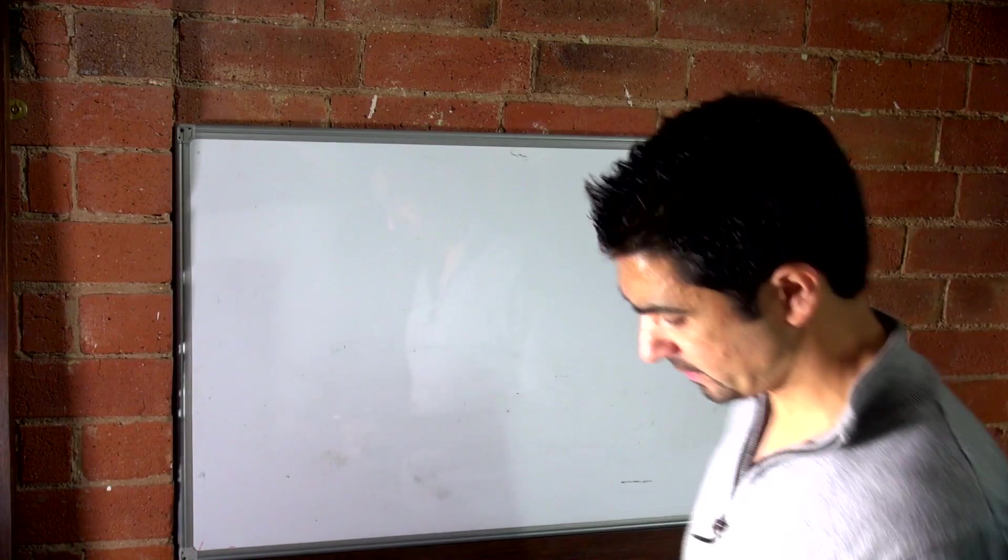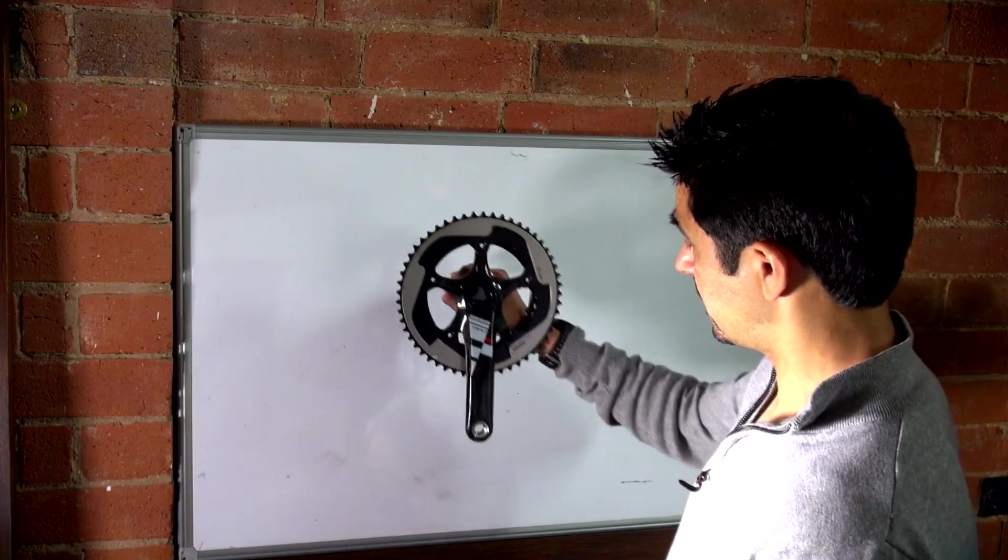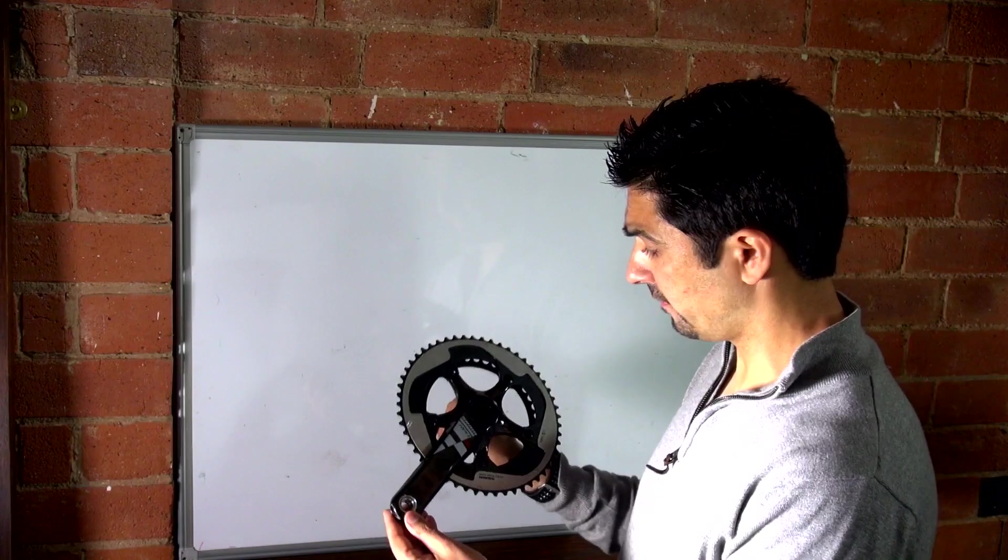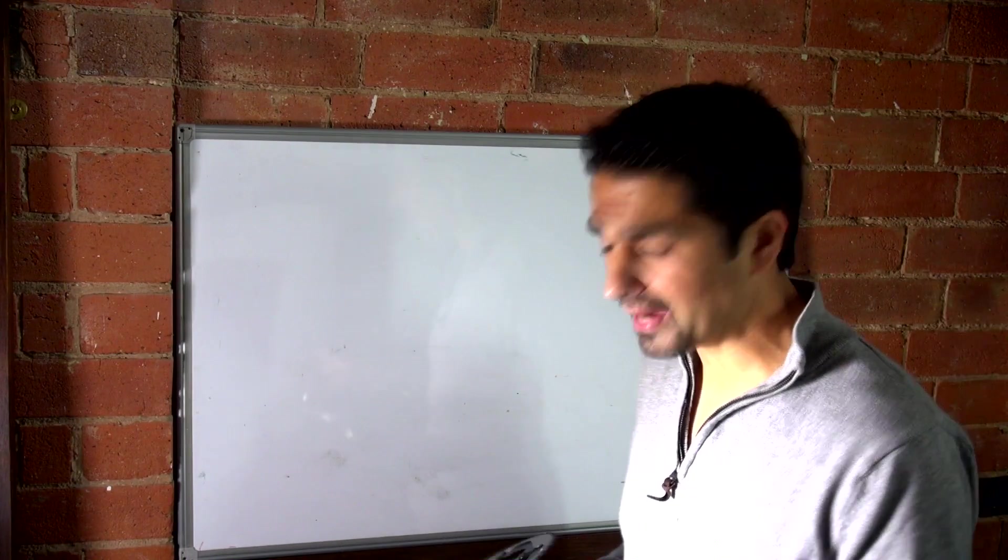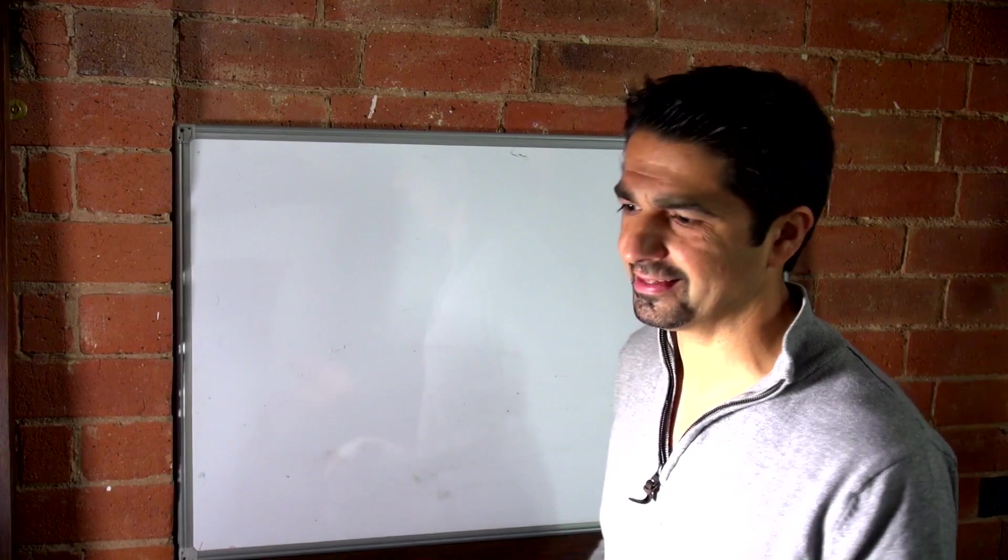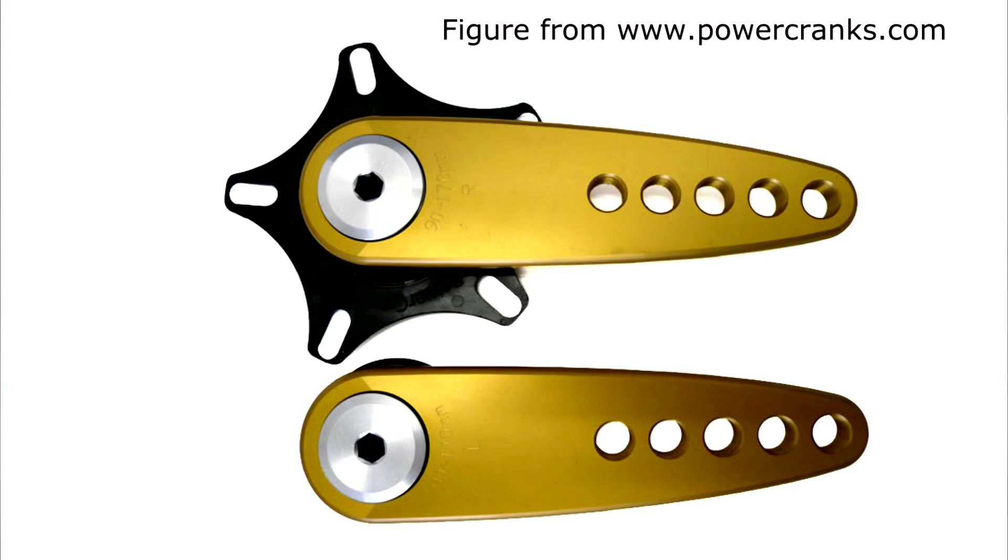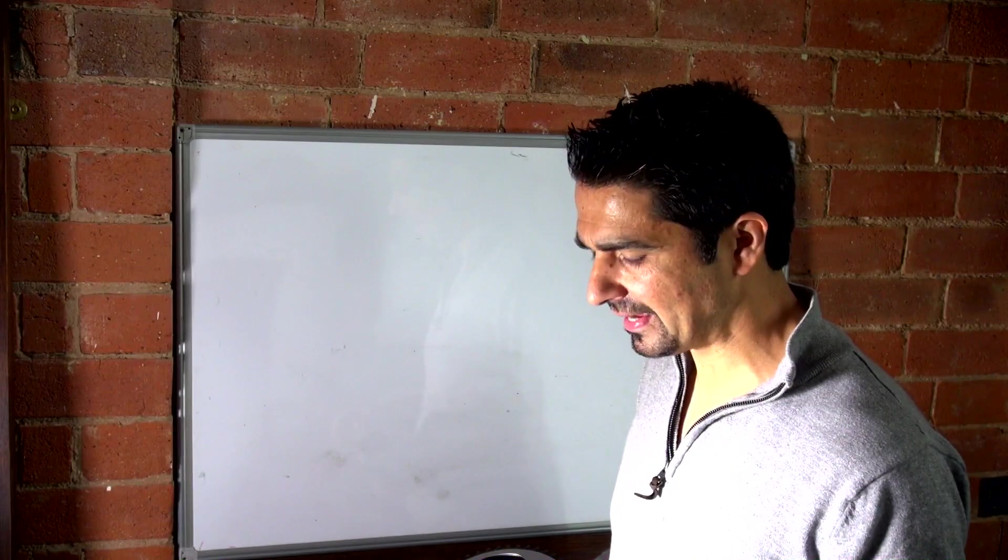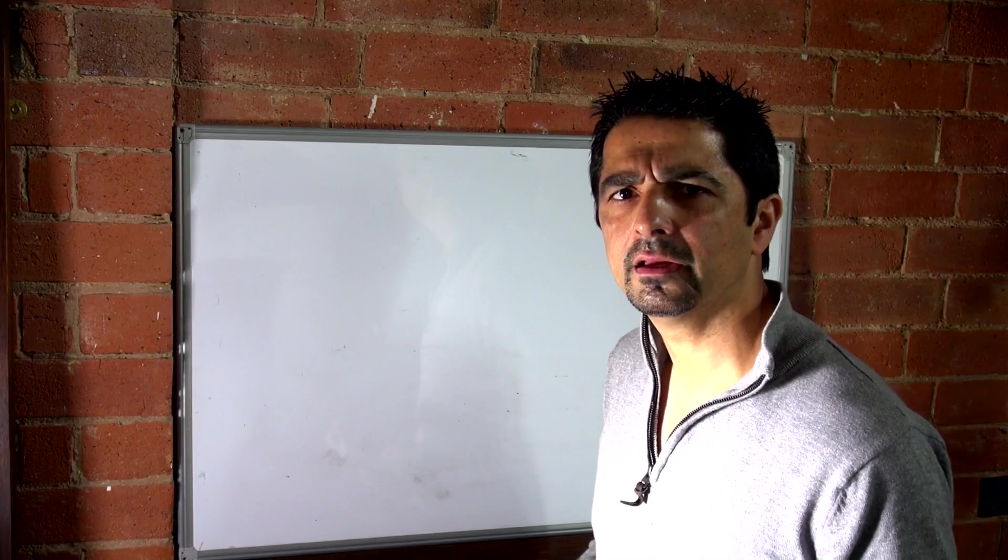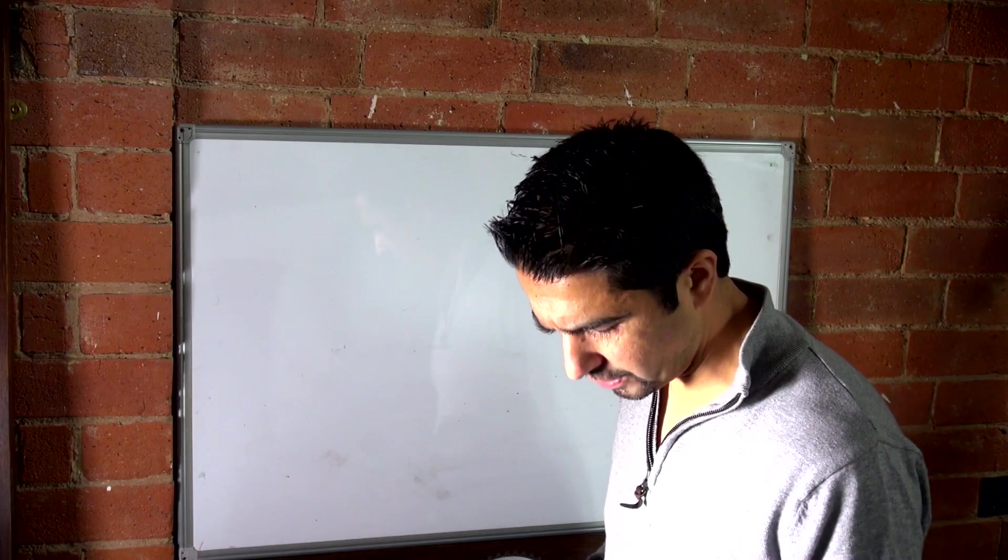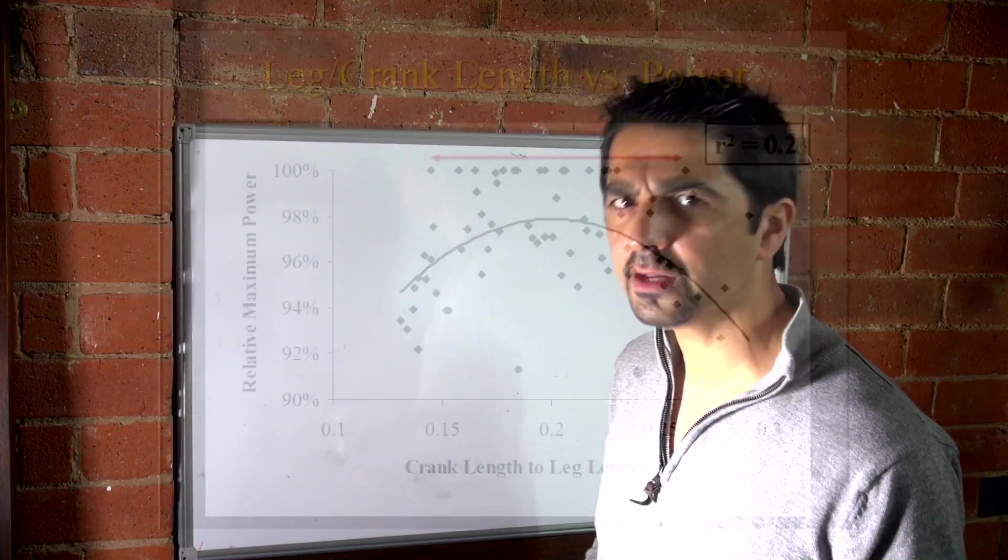First thing to think about is, do we really need cranks that are 172.5mm? 172.5mm is a convention. You buy a bike, you don't really think about it, it's in a medium, you get on, you just start pedaling, you get used to that crank length. You adjust the seat height for the crank length and everything seems fine. But is that really the optimum crank length? Is that the optimum for your height? Is that the optimum for your leg length? The chances are it's not.